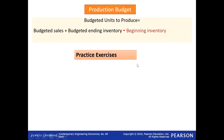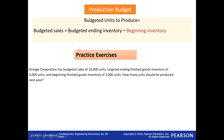Here are some practice exercises — very simple, not in your book, just extra practice. Orange Corporation has budgeted sales of 16,000 units. Targeted ending finished goods inventory is 4,000 units. Beginning inventory is 2,000 units. How many units should be produced next year? Using the formula: budgeted sales plus budgeted ending inventory minus beginning inventory: 16,000 + 4,000 − 2,000 = 18,000 units. So 18,000 is the answer.